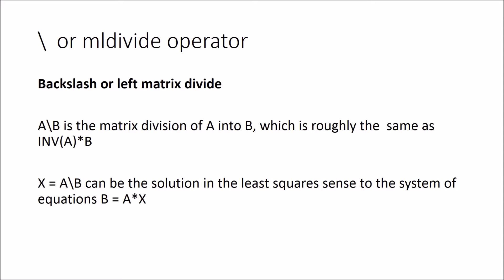For our curve fitting and regression purposes, the way it works is that we can come up with X equal to A backslash B from a couple of data sets that gives you the best fit values for X in a least squares perspective for the equation B equals A times X.